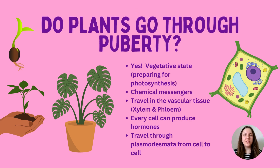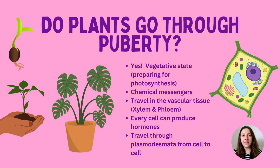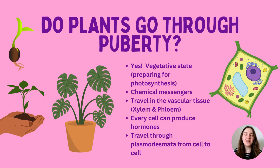We often associate hormones with puberty — the transition from child to adult — when hormone levels increase. But hormones are constantly released; for example, insulin is always being released to store glucose as glycogen. If humans undergo puberty, do plants? The answer is yes — plants undergo their own version called the vegetative state, where the plant begins developing its leaves, which are a crucial organ for capturing sunlight energy in photosynthesis.